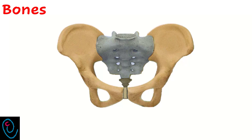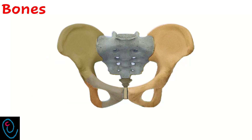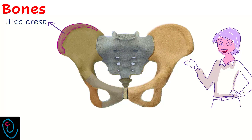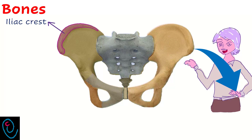Each hip bone is formed of three fused bones: ilium, ischium, and the pubis. The ilium is the upper part of the hip bone. The upper border of the ilium is called the iliac crest. When you place a hand on the hip, it rests on the iliac crest. The anterior concave surface of the iliac bone is called the iliac fossa.